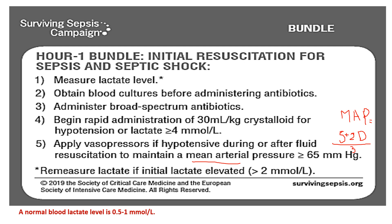The final intervention is to apply vasopressor medication to correct the patient's hypotensive state and maintain mean arterial blood pressure above 65 mmHg. To calculate mean arterial blood pressure, the formula is: systolic blood pressure plus two times diastolic blood pressure, divided by three. Now we have finished the lecture. You know that if your patients develop Systemic Inflammatory Response Syndrome, they are at higher risk to develop Multiple Organ Dysfunction Syndrome, which we will discuss in the next lecture.